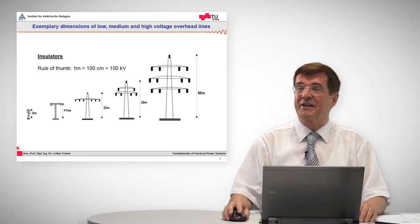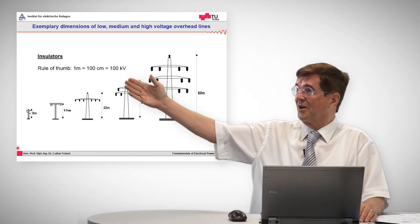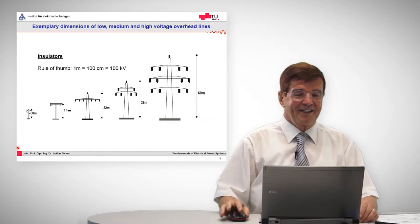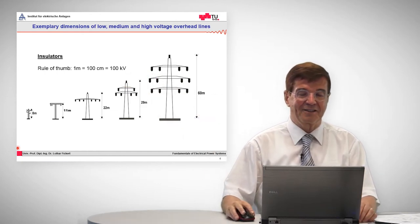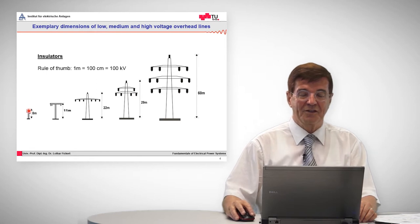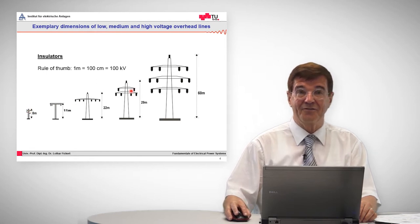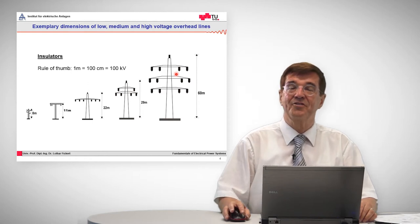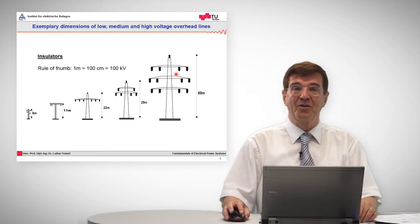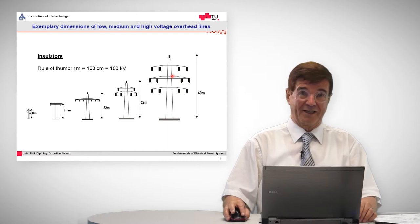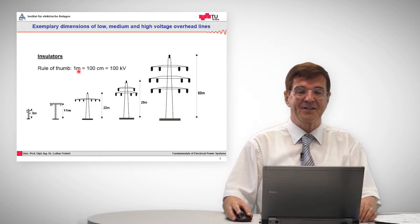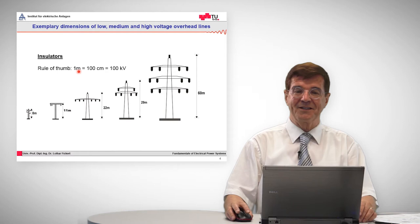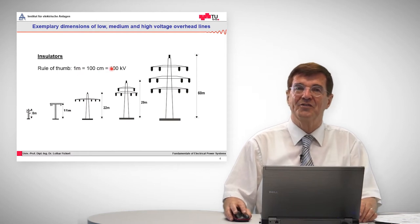We all know the overhead lines which we can see. They are constructed for small voltages to medium voltages, high voltages, and extra high voltages. There's a common rule by which you can determine what is the transport voltage of a given overhead line. The rule of thumb is that one meter, or 100 centimeters, is 100 kV of system voltage.